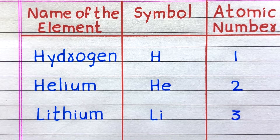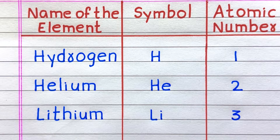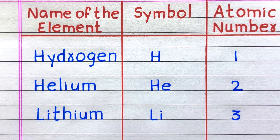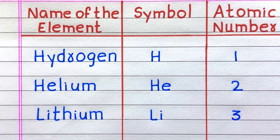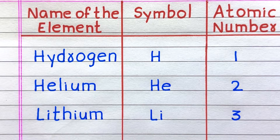The first element is Hydrogen, symbol H, atomic number 1. Second, Helium, He, 2. Third, Lithium, Li, 3.